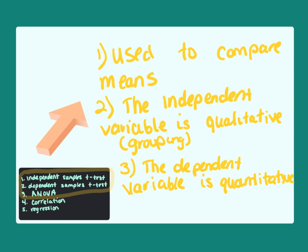Now, there are variations of some of these tests, including ANOVA — there are lots of different variations of ANOVA. But I'm looking at the simplest version, the one-way ANOVA, in which these three characteristics are true.